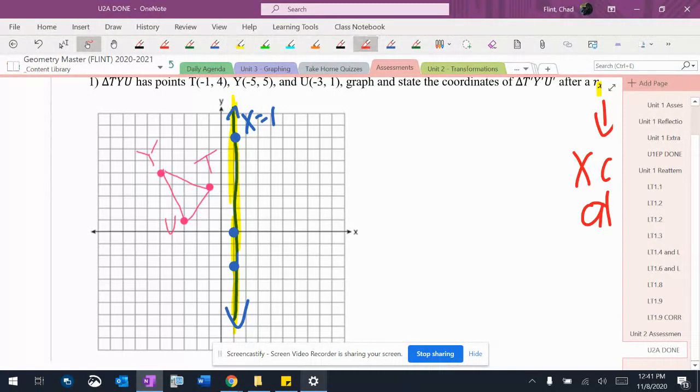And then I just take each point and count it to that line on the other side. So 1, 2, 1, 2. There's where T goes.